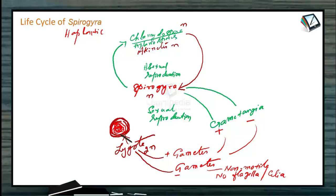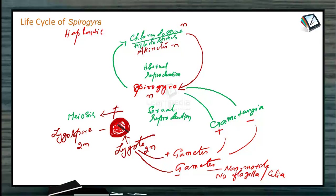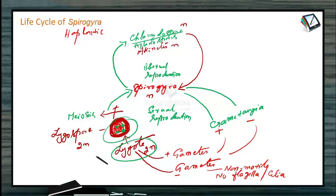The diploid zygospore undergoes meiosis, and after meiosis, haploid nuclei are produced. Three nuclei degenerate, and the remaining one germinates to produce a Spirogyra filament. So this is the life cycle of Spirogyra. Since the diploid stage is confined only to the zygote and zygospore, and all other stages are haploid, this life cycle is called a haplontic life cycle.